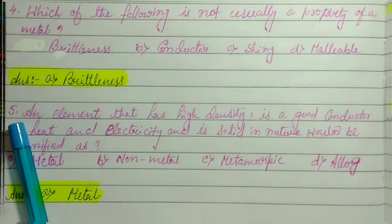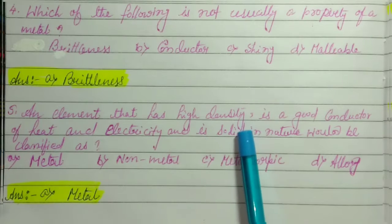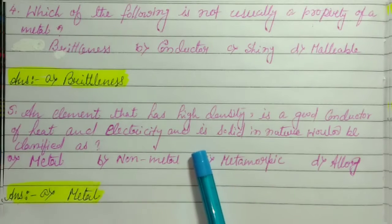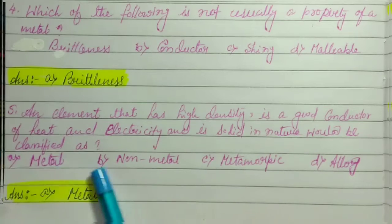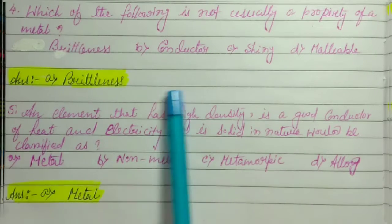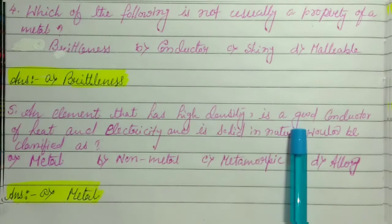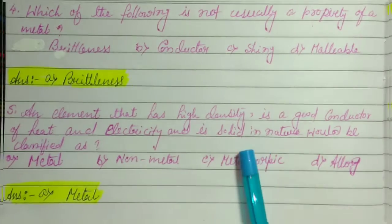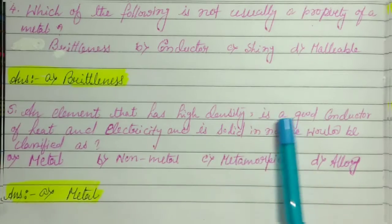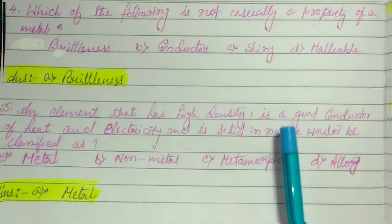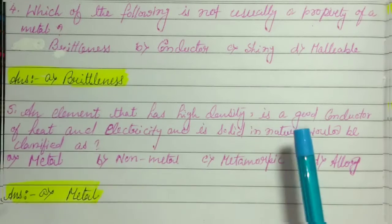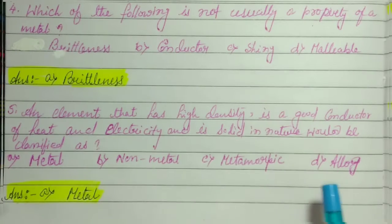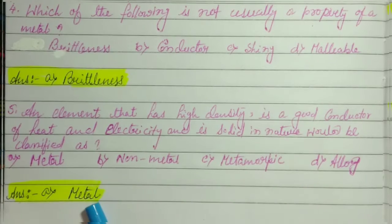Question number 5: An element that has high density, is a good conductor of heat and electricity, and is solid in nature would be classified as — we know elements are classified into metals and non-metals. The options include metal, non-metal, metamorphic, and alloy. The correct answer is metal.